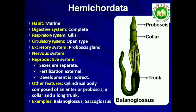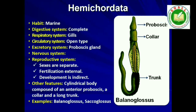Phylum Hemichordata: Hemichordata was earlier considered as a subphylum under phylum Chordata, but now it is placed as a separate phylum under non-Chordata. This phylum consists of a small group of worm-like marine animals with organ system level of organization. They are bilaterally symmetrical, triploblastic and coelomate animals. The body is cylindrical and is composed of an anterior proboscis, a collar and a long trunk. Circulatory system is of open type. Respiration takes place through gills. Excretory organ is proboscis gland. Sexes are separate. Fertilization is external. Development is indirect. Examples: Balanoglossus and Saccoglossus.